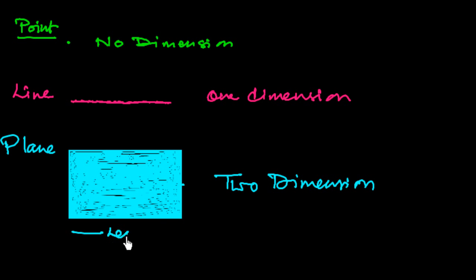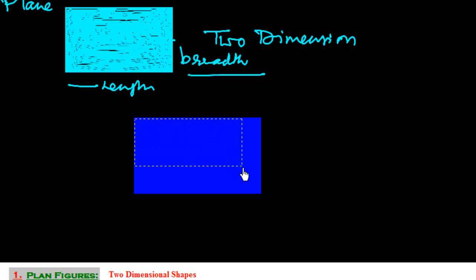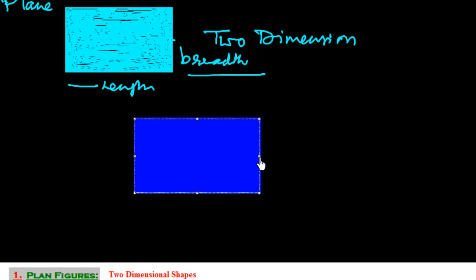In a two-dimensional figure there is length and breadth. For a line there is only length, and a point does not have any length, breadth, or height — so a point has no dimension.